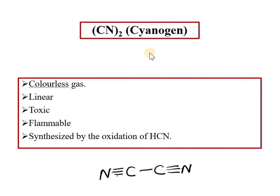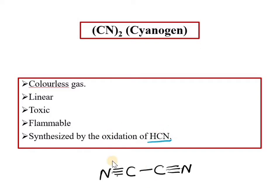If we look at cyanogen, it is a colorless gas, geometrically linear, toxic in nature, and flammable. It can be synthesized by the oxidation of HCN, and it can be oxidized by various oxidizing agents. Cyanogen has a linear geometry.